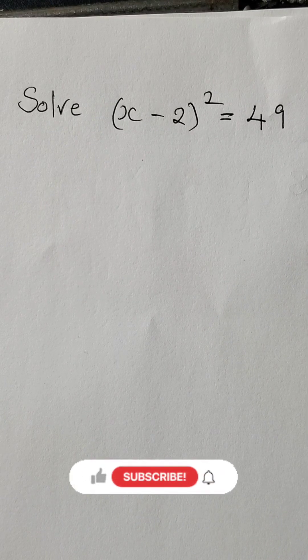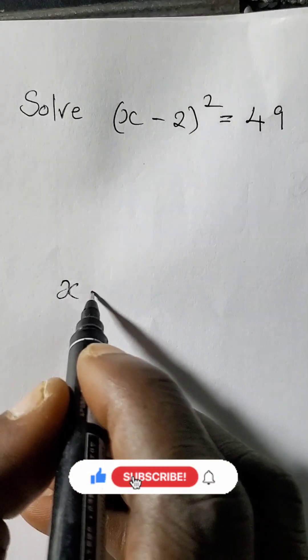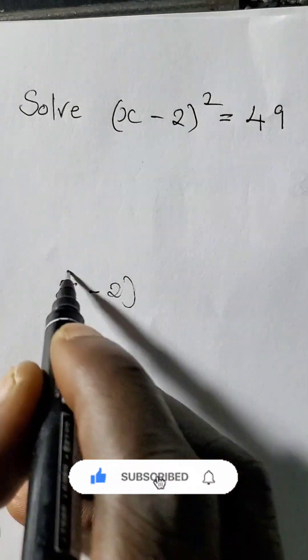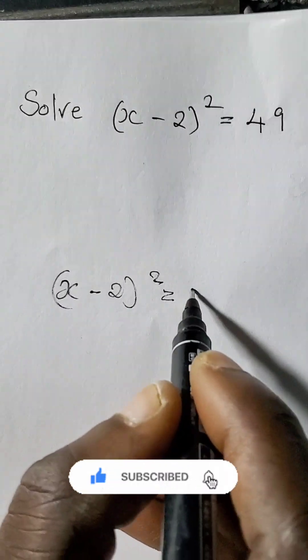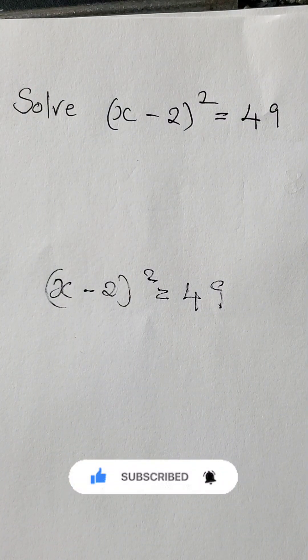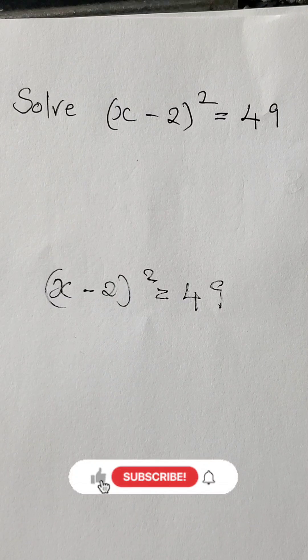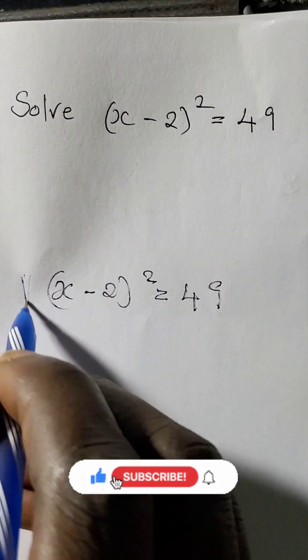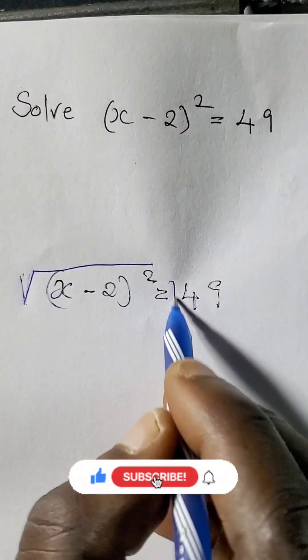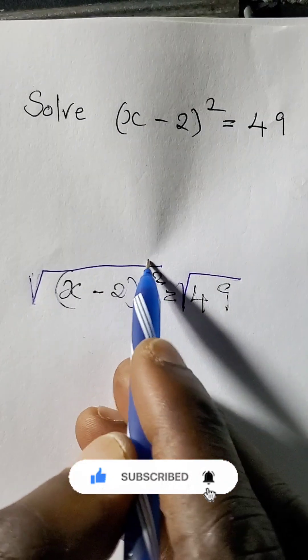Hello guys, to solve this equation we are going to write (x - 2)² = 49. Then we're going to take the square root of both sides like this. This square symbol and the square root cancel.